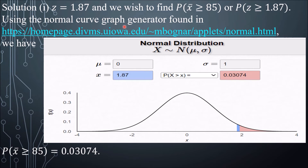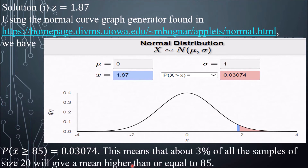Using this normal curve graph generator with this link, we plug in x equal to 1.87 as our z-score and select greater than. As a result, we have 0.03074. So that is the probability of having the mean greater than or equal to 85. This means that 3% of all the samples of size 20 will give a mean higher than or equal to 85.